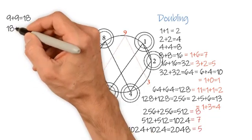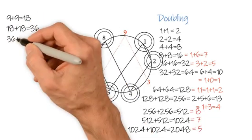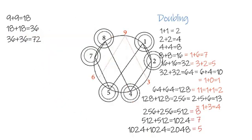9 doubled becomes 18. 18 doubled is 36. 36 doubled is 72. So, if you add those numbers, 18, 36 and 72, they always equal 9.